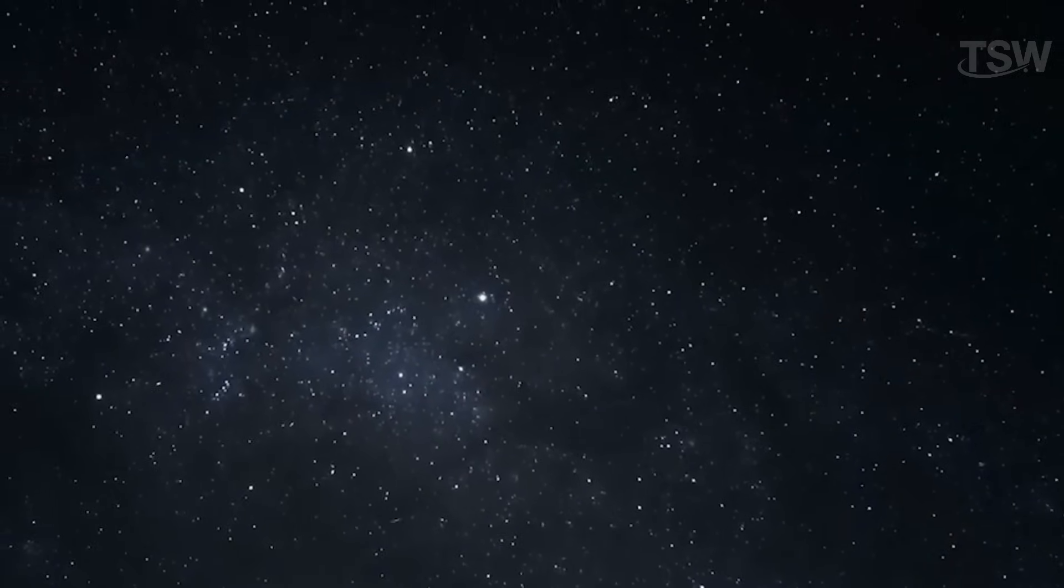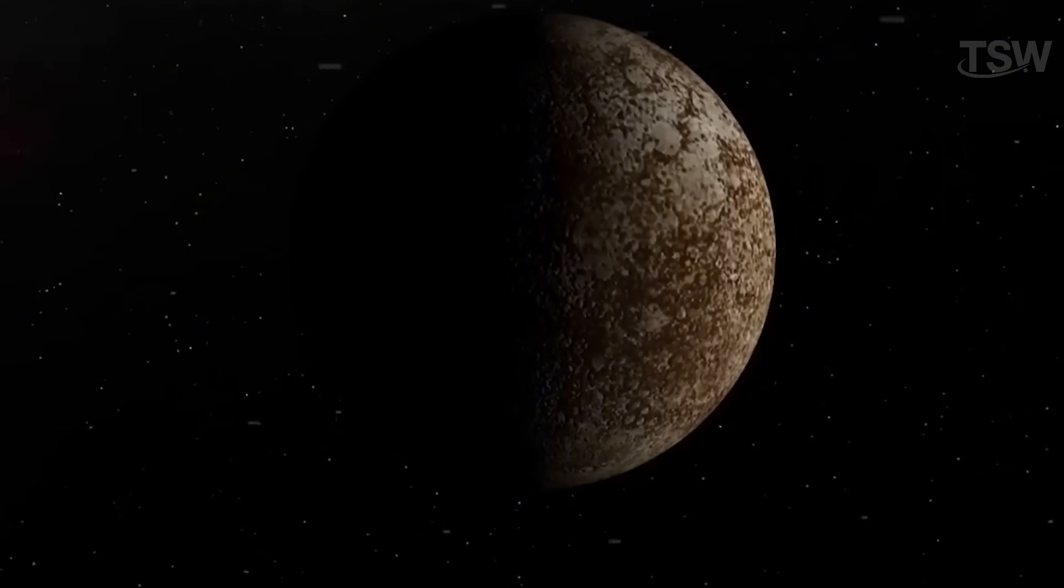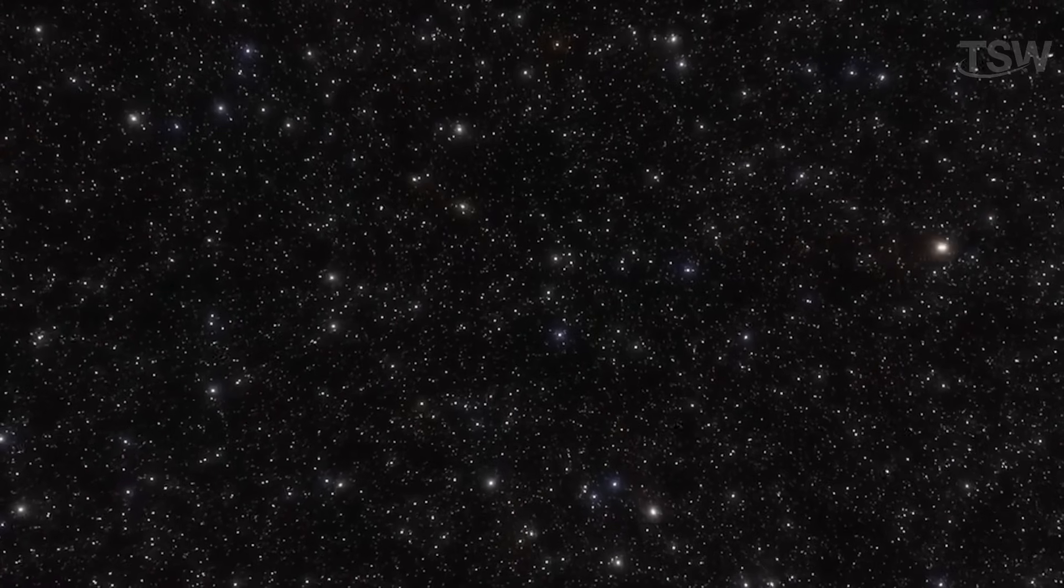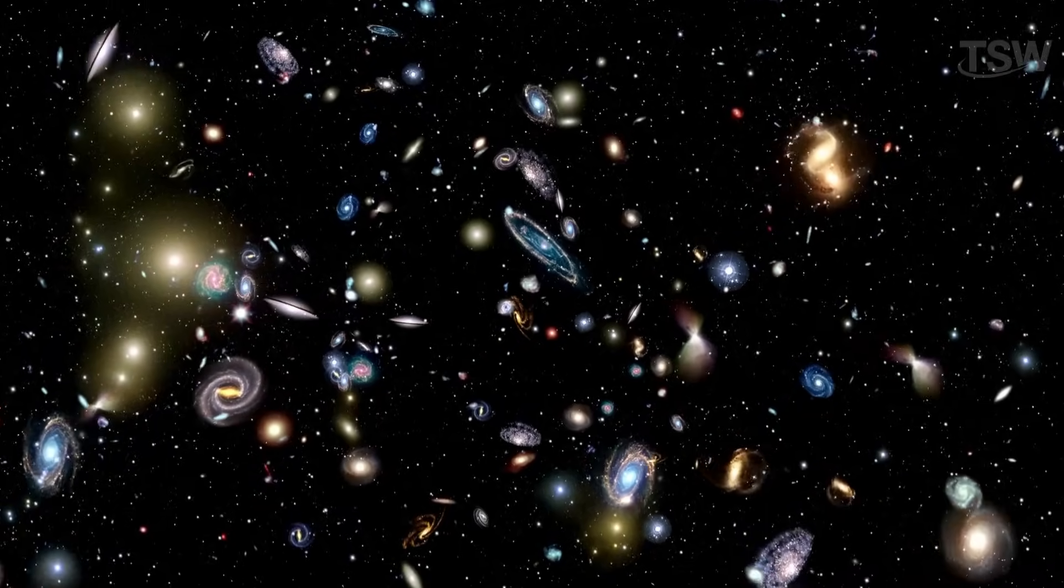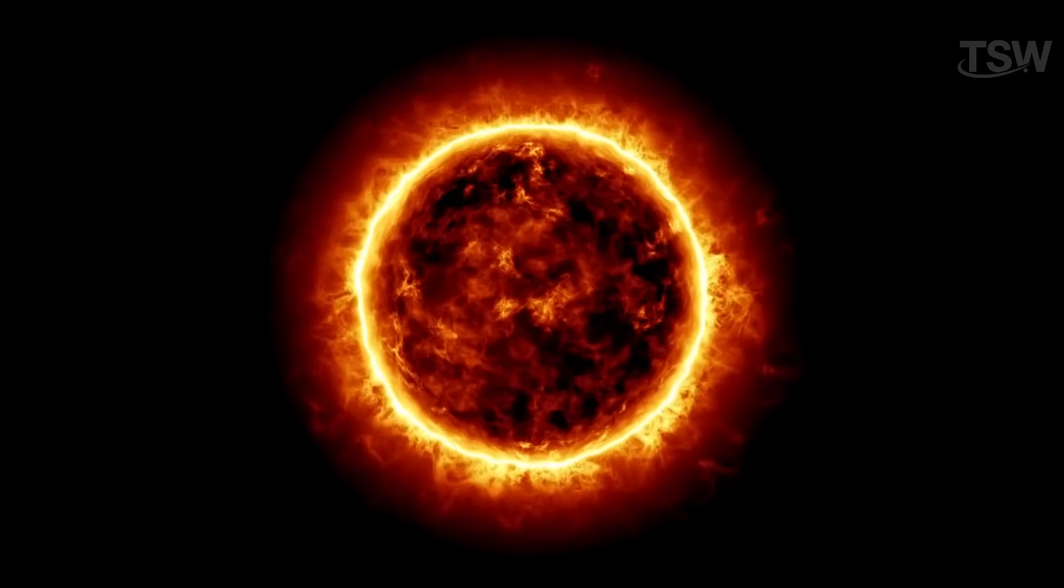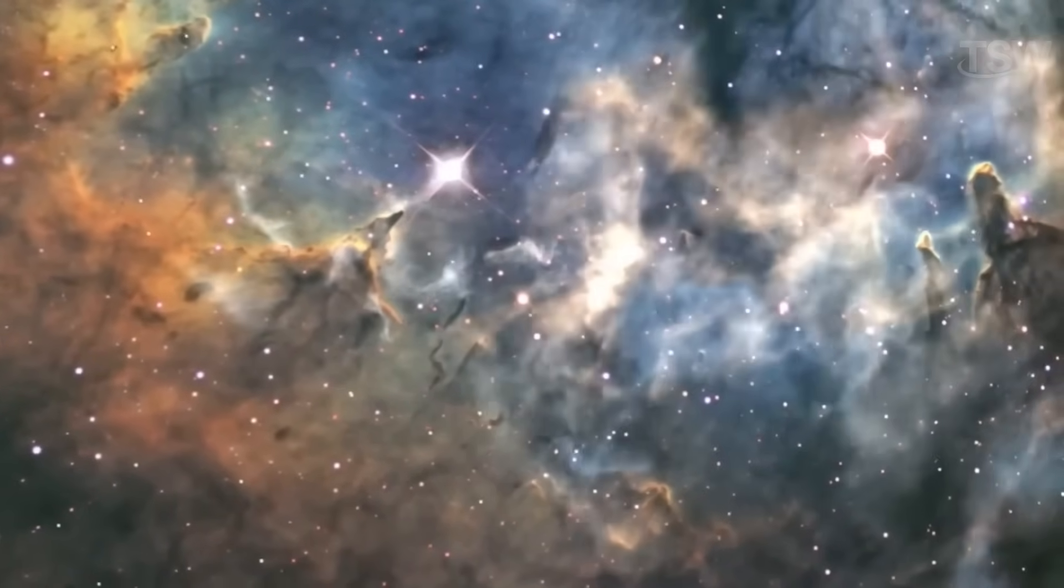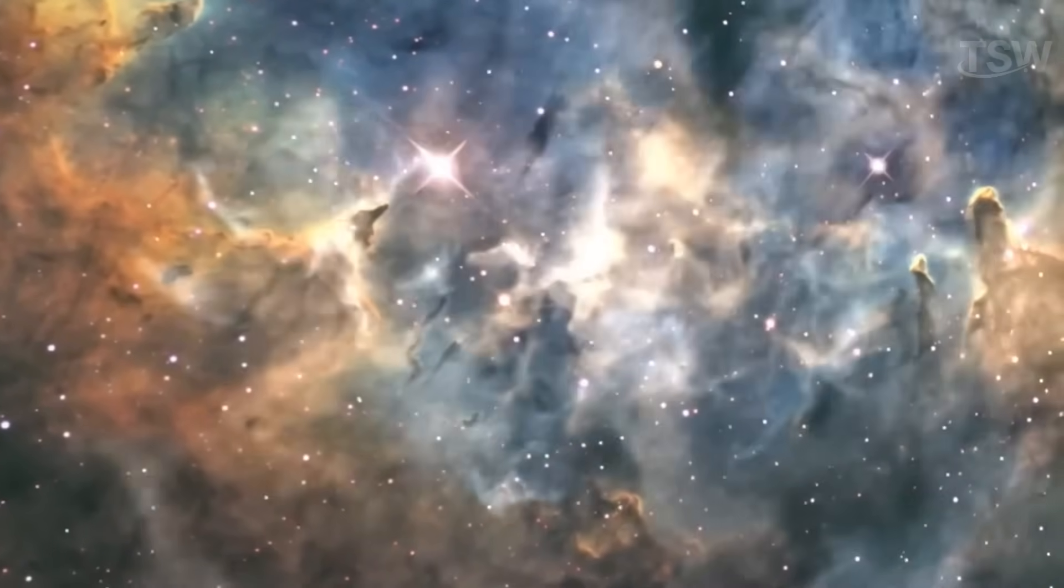Contrary to what many people believe, it's not the absence of light that makes space dark. In fact, there are billions of stars scattered across our galaxy, and billions of galaxies in the universe, each with its own suns and planets reflecting light. With so many light sources, you'd expect the sky to be incredibly bright all the time. But that's not what happens.